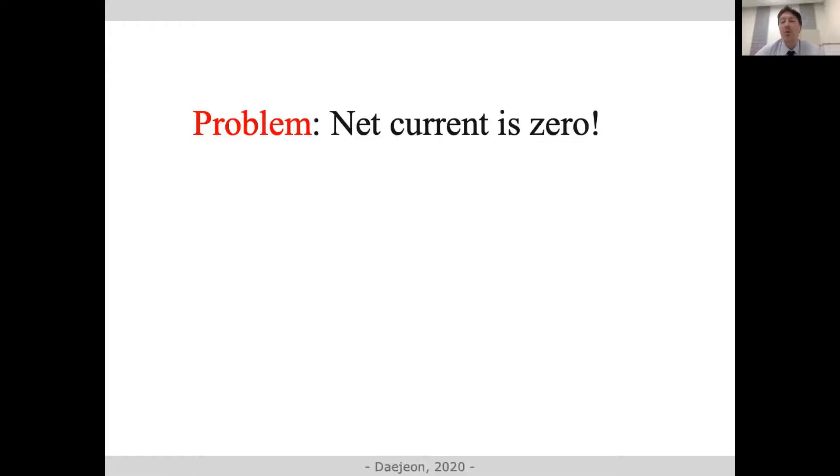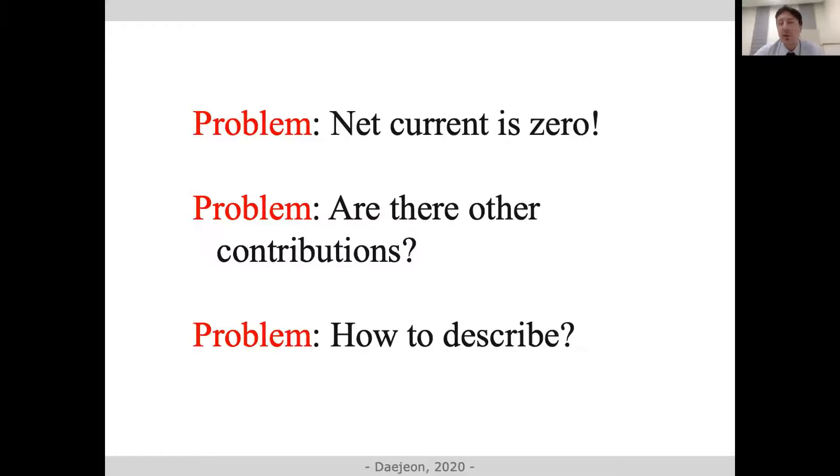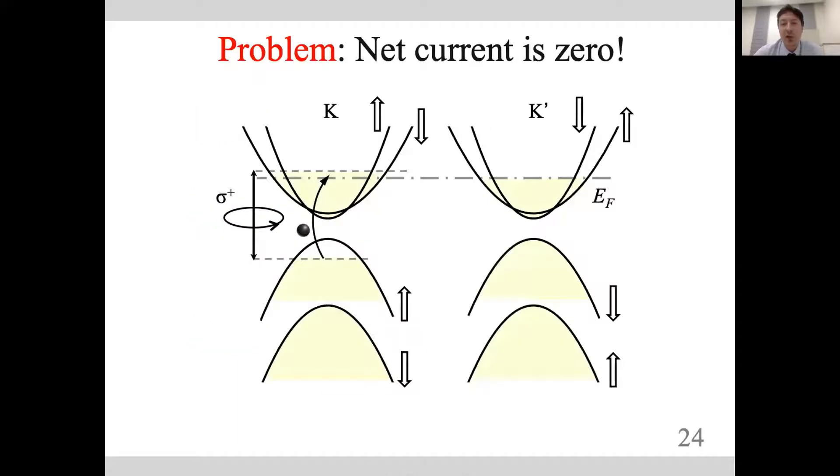Now many problems arise. First, the net current is zero. We have two valleys connected by time-reversal symmetry, and in equilibrium, currents from different valleys run in different directions and compensate each other. Another question, more problematic actually: are there other contributions to the effect in addition to the warping current and the Hall current due to the Berry phase? And another problem is how to describe the system. So far, we have only considered the classical regime with distribution functions, which is probably not sufficient.